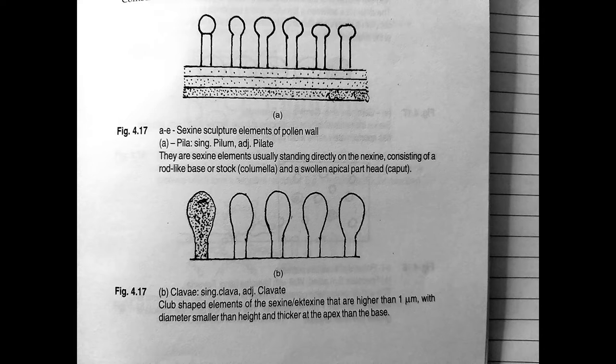In pilate type, the pollen grain or spore has a complete smooth surface. That means the tectum is devoid of any processes. This is found in Aconitum and Betula.